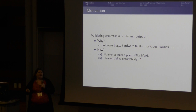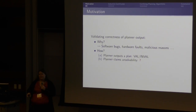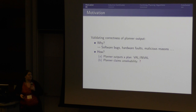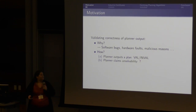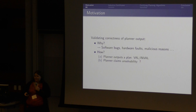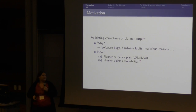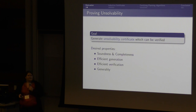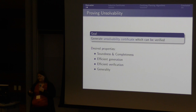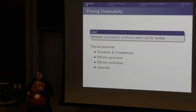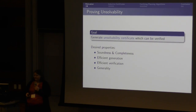For classical planners, if it outputs a plan, it's rather easy to verify that. You just apply the plan to the initial state and see if you end up in a goal state. We already have tools for that, namely VAL and INVAL. But what about if the planner says this problem is unsolvable? Currently, it doesn't tell you any reason why. So this was basically the goal of our paper.